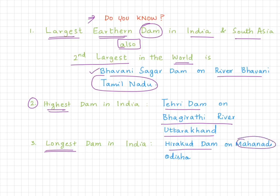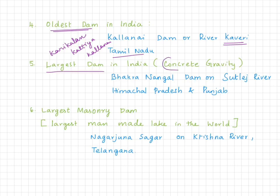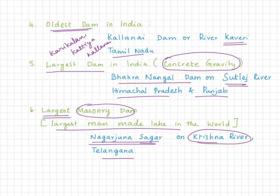Question 3: name the longest dam in India. The answer is Hirakud Dam. Question 4: name the oldest dam in India. It is none other than Kallanai (Grand Anicut). Question 5: name the largest concrete gravity dam in India. The answer is Bhakra Nangal Dam. Question 6: what is the largest masonry dam in India? It is Nagarjunasagar Dam.